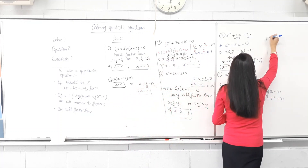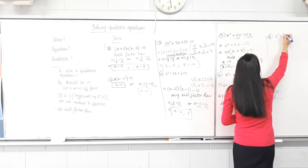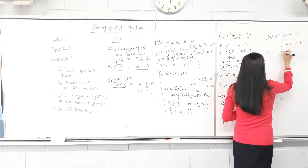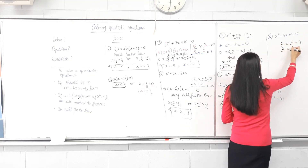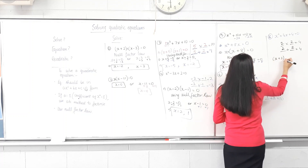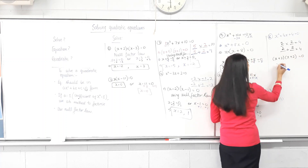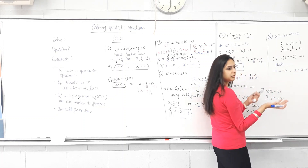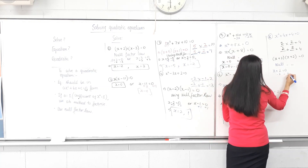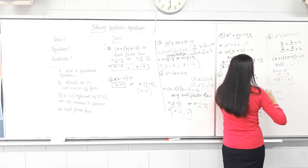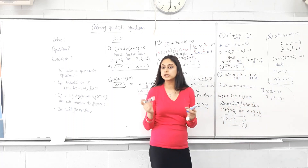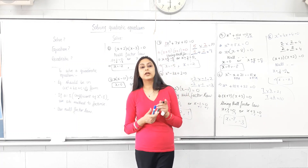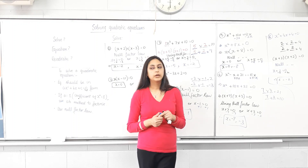Let's do a quick question. Can I use the A-B method? Yes. Two numbers times to give 4 and add to give 4: that's 2 and 2. So we get x plus 2 times x plus 2 equals 0. Using null factor law: x plus 2 equals 0, or x plus 2 equals 0 — same answer. So x equals negative 2. How many answers did I get? One. So does a quadratic always need two answers? No. Can it have one answer? Yes. Can it have no answers? Yes, it can. Can it have more than two answers? No, it won't. We'll talk about that when we do graphs.